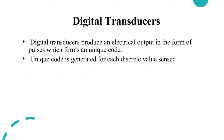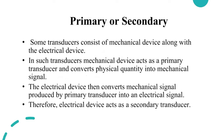Digital transducers produce a digital output in the form of pulses which form a unique code. Now, transducers are also classified as primary and secondary transducers. A primary transducer senses the input immediately as an electrical signal, whereas a secondary transducer first converts it into a mechanical signal and then into an electrical signal.